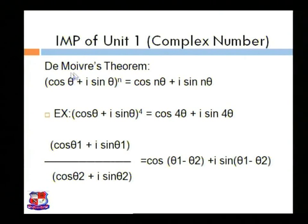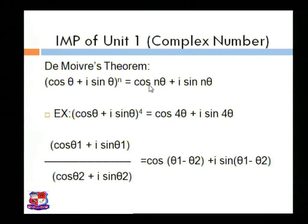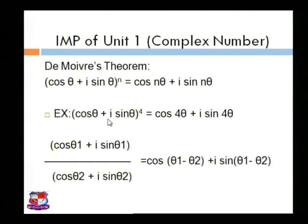Today we are discussing our next theory, that is De Moivre's theorem. If we have (cos theta plus i sin theta) raised to n, then we can write this as cos n theta plus i sin n theta. The power n is multiplied with the angle, giving n theta. For example, (cos theta plus i sin theta) raised to 4 is equal to cos 4 theta plus i sin 4 theta.